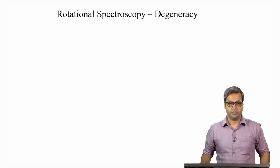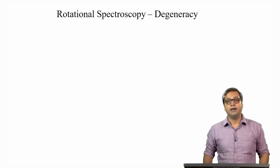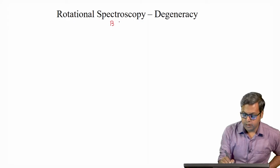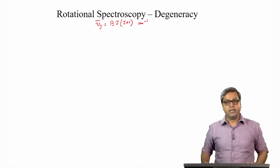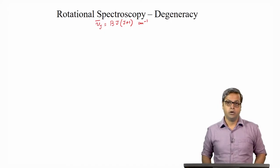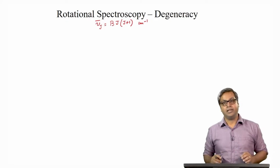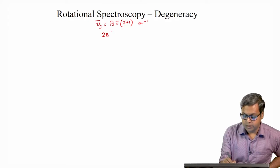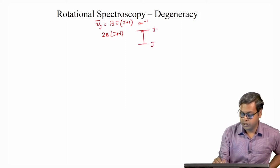Hello everyone, welcome to this lecture. So far, in the earlier lectures on rotational spectroscopy, we have only considered the energies of different rotational levels. We saw that the energy is given by B times J times J plus 1. This is the energy ν̄J in wave numbers, which depends on only one quantum number J, the rotational quantum number. We also focused on the energies of the lines in the rotational spectrum, and these energies are given by 2B times J plus 1 for a transition from J to J plus 1.